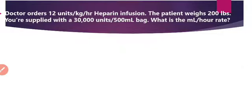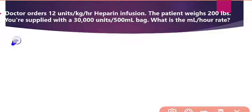Our third problem states that the doctor orders 12 units per kg per hour heparin infusion. The patient weight is 200 pounds, and you are supplied with 30,000 units per 500 ml bag. What is the ml per hour rate? First, we have to convert the patient weight into kilograms because the order is 12 units per kg per hour. When converted, the patient weight is approximately 90.90 kg.